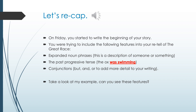The past progressive tense — that's when it's past tense but the verbs you are using are present, for example: the ox was swimming. And the conjunctions 'but' and 'and' or 'or' to add more detail to your writing.